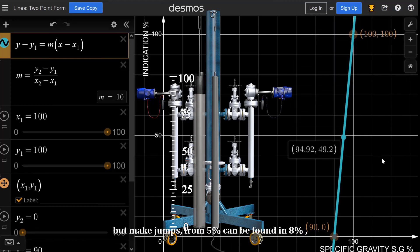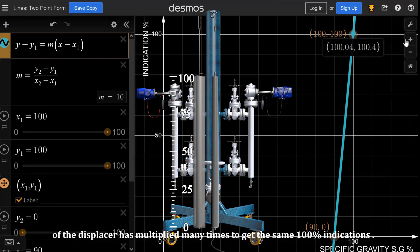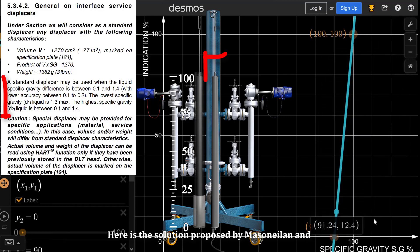From 5% it can be found at 8%. And this is because the input signal, that in this case is the up and down motion of the displacer, has been multiplied many times to get the same 100% indications.